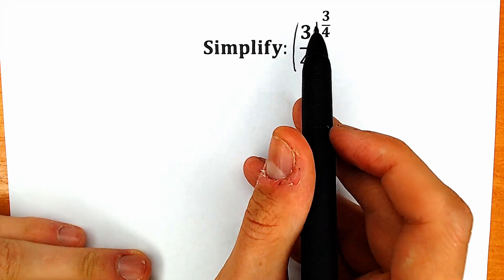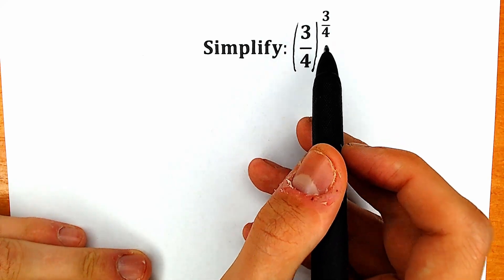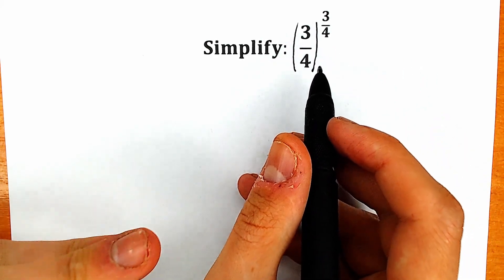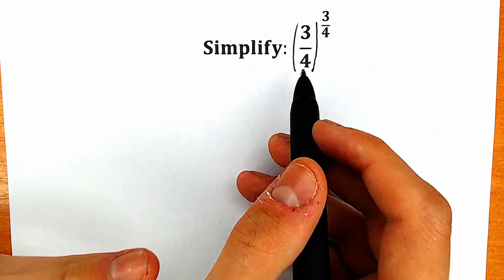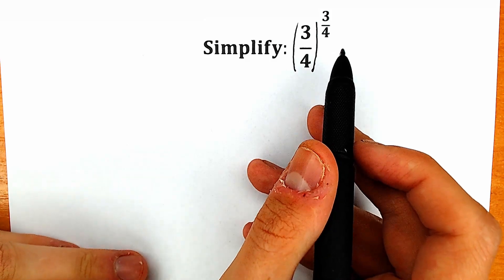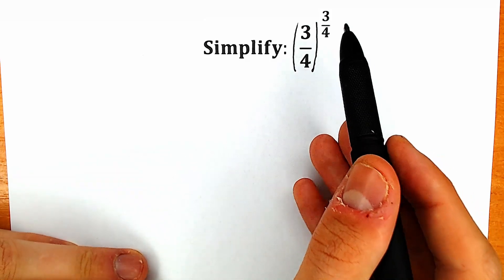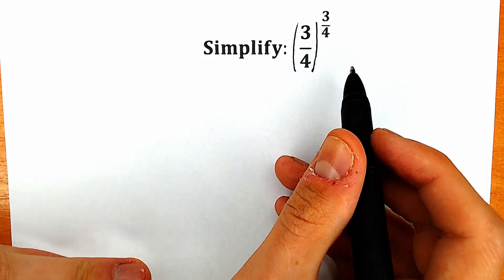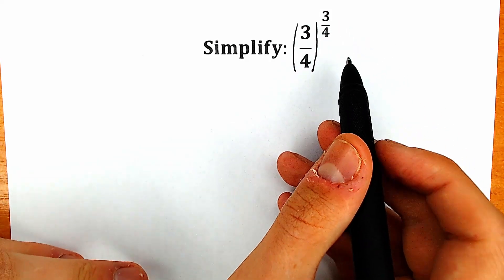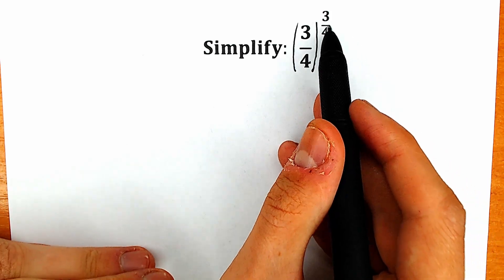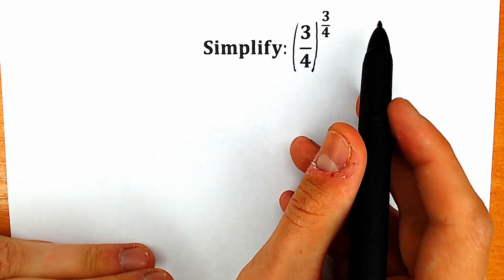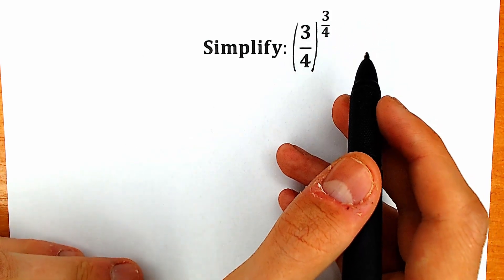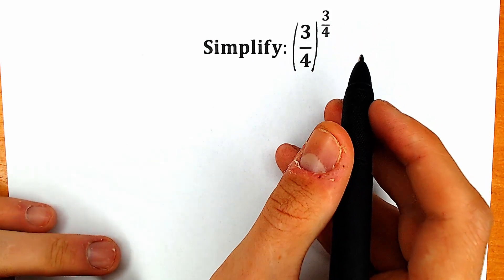We need to rate this three-fourths to the power three-fourths. A lot of students might say, hey mister, I can easily do this in a few seconds. But then I mention them, okay, what about this three-fourths? This is not a square, this is not a cube — we prefer things like square, cube, fourth, fifth power. This is a fraction, three-fourths. So how can we work with this fraction?